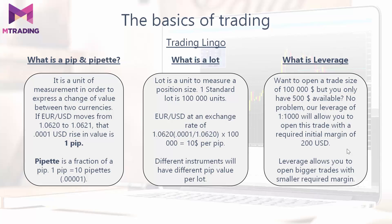Moving on to leverage. Let's say you want to open a trade size of $100,000 but you only have $500 available. With us, no problem, because we offer leverage of 1 to 1,000. This will allow you to open this trade with a required initial margin of only $200. Leverage allows you to open bigger trades with much smaller required margin, so you can start trading with a small amount.